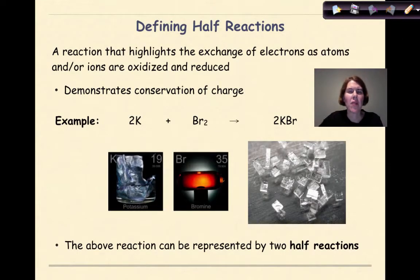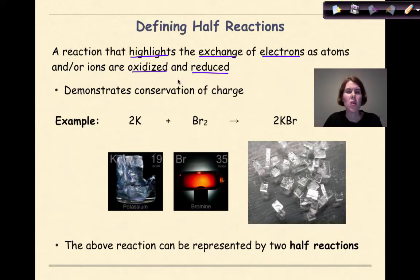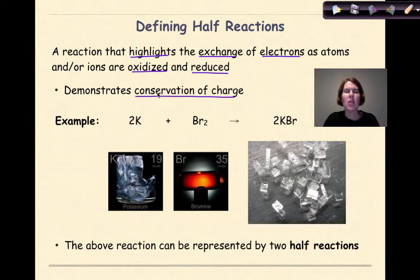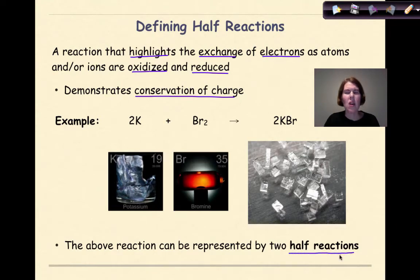A half-reaction is going to highlight the exchange of electrons as atoms and/or ions are oxidized and reduced. We already talked about oxidation and reduction in the previous tutorial. What we're going to do now is apply that concept to a chemical reaction. We're specifically going to be looking for a conservation of charge — meaning the number of electrons lost equals the number of electrons gained. We have potassium plus bromide gives us potassium bromide, and we're going to break it down into two half-reactions: one representing oxidation and one representing reduction.